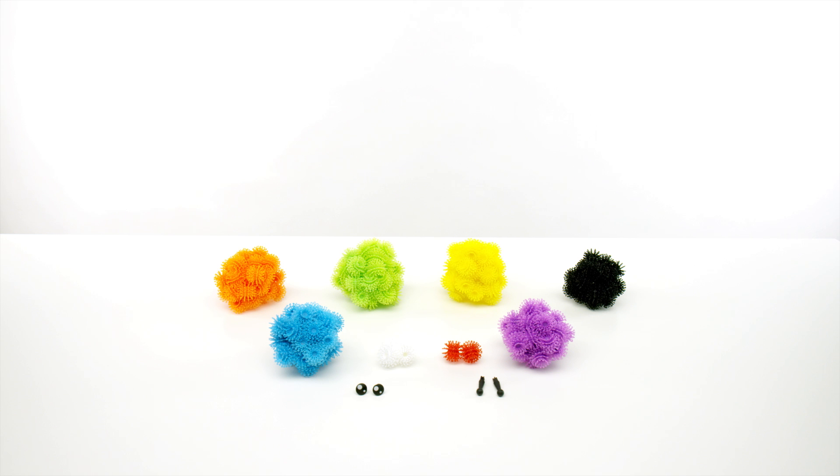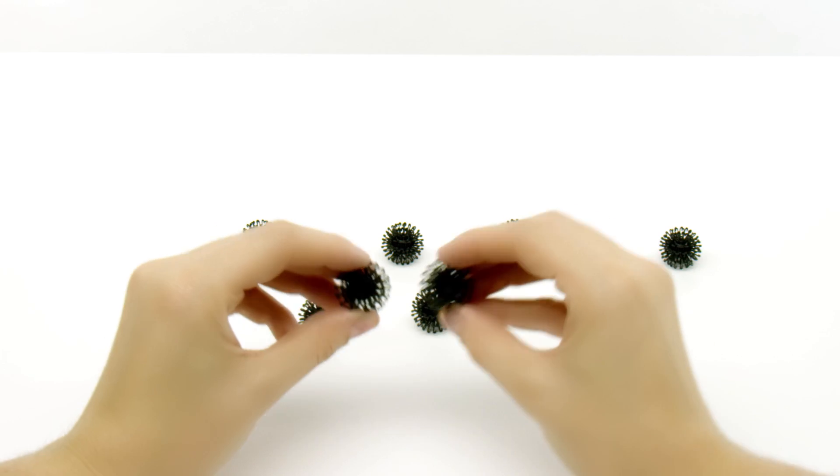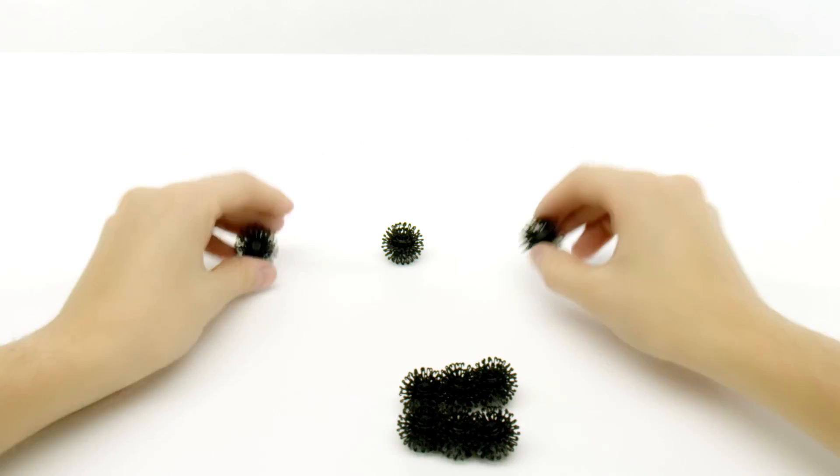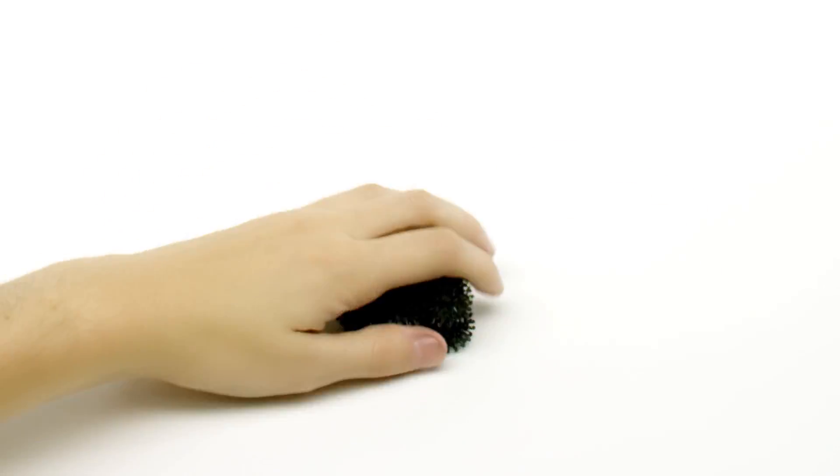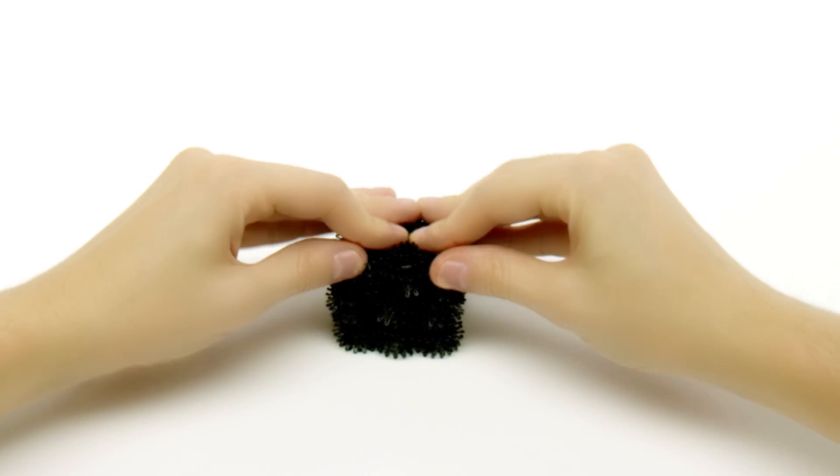To build a robot, you'll need all this. First, take nine black and make chains of three Bunchems. Then bunch them together to make a square. Stack another black square on top and then another to make a cube.